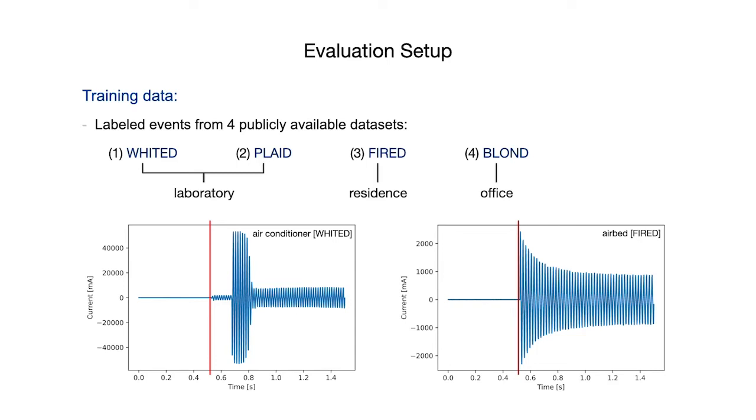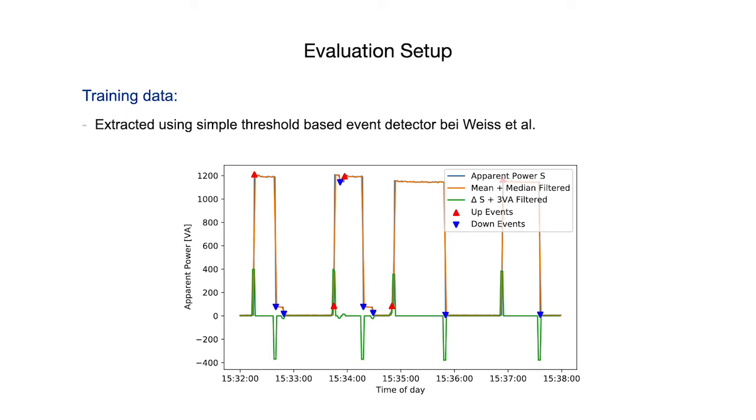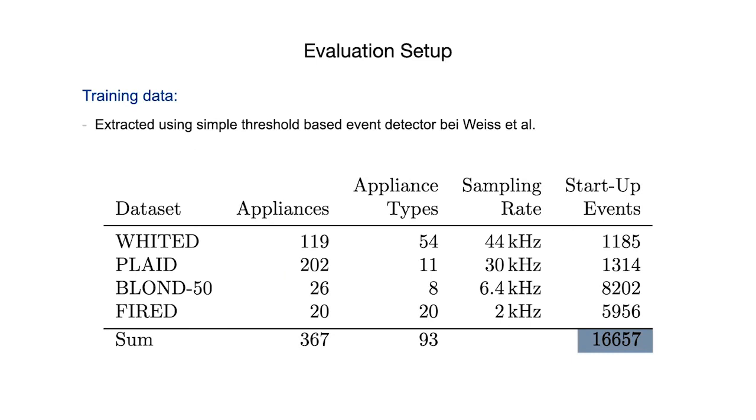While Whited and Platt directly contain such startup events, they need to be extracted from the continuous measurements of Fired and Blond. We did so by using a simple threshold-based event detector that has been introduced by Weiss et al. It uses the apparent power signal and filters these using the combination of a mean and median filter. After that, the derivative is taken and all deltas with less than 3 watts are forced to zero. Positive values are then treated as startup events and negative values as shutdown events. We further restricted that consecutive events need to be further apart than 3 seconds. In total, we extracted over 16,600 startup events from more than 350 individual appliances.